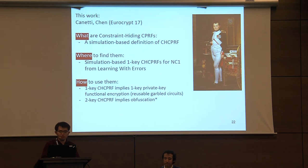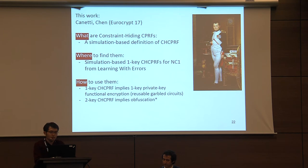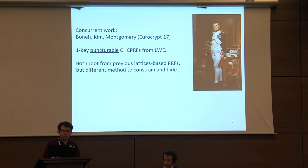We show that CHC PRF implies one-key functional encryption, and two-key CHC PRF implies obfuscation. Also concurrent to work by Boneh, Kim, and Montgomery, which was presented in the previous talk, they show one-key punctured constrained PRF from LWE. We both root on lattice-based PRFs but use different methods to hide and constrain.